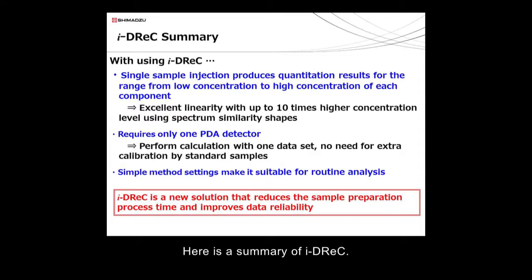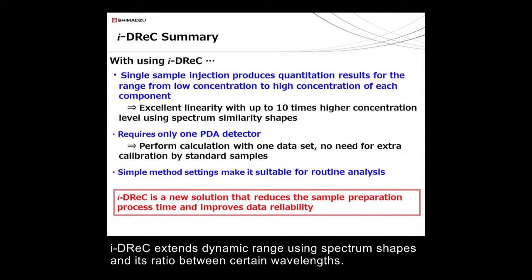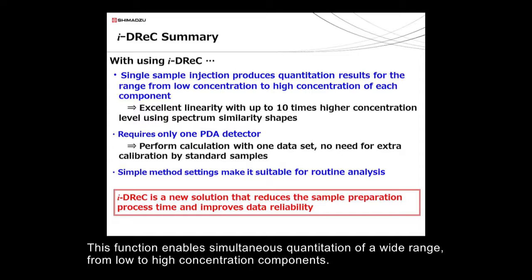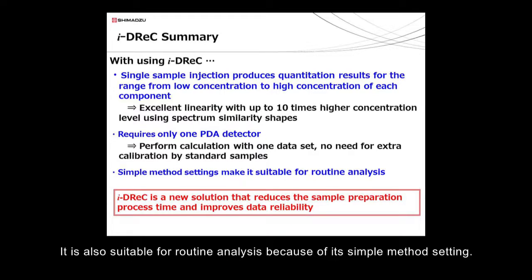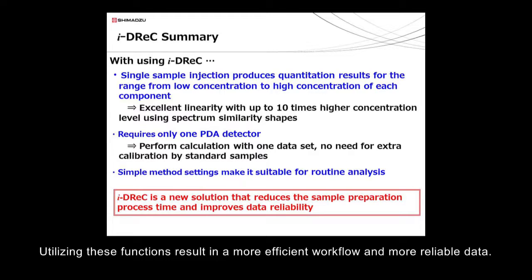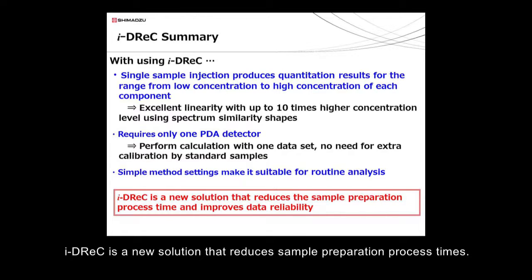Here is a summary of iDREC. iDREC extends dynamic range using spectrum shapes and its ratio between certain wavelengths. This function enables simultaneous quantitation of a wide range from low to high concentration components. iDREC uses a single channel from a single PDA detector, so there is no need for extra calibration using standard samples. It is also suitable for routine analysis because of its simple method setting. Utilizing these functions results in a more efficient workflow and more reliable data. iDREC is a new solution that reduces sample preparation process times.